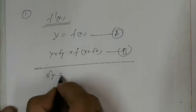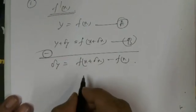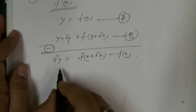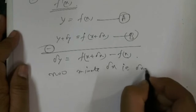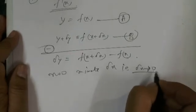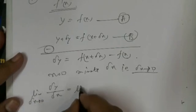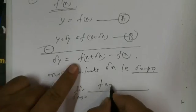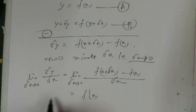This equation is (a) and this equation is (b). If we subtract them, we get: delta y = f(x + delta x) − f(x). Now, as delta x tends to 0, the limiting value of delta y upon delta x when delta x tends to 0 is: f(x + delta x) − f(x) upon delta x. This is known as f'(x), the differential coefficient.